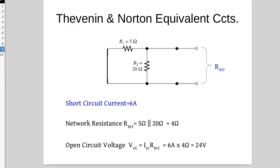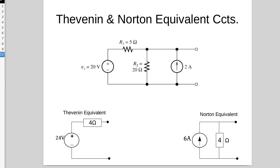So we've got the short circuit current and the network resistance, and that allowed us to calculate the open circuit voltage, and that allows us to create both the Thevenin equivalent and the Norton equivalent.